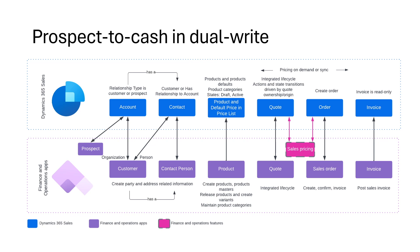Starting from the left-hand side, we have prospects, customers, and contact persons bidirectionally synchronized. Parties, vendors, positions, and electronic addresses can be synchronized as well.